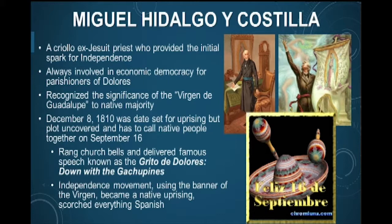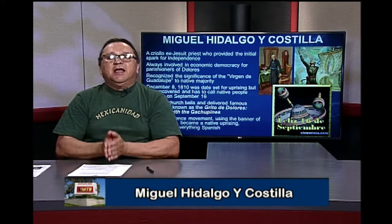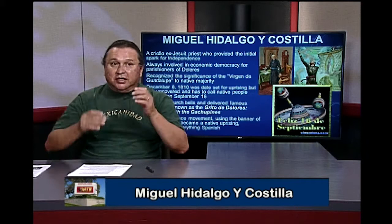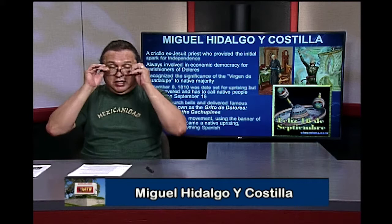Miguel Hidalgo y Costilla is important because he was a Jesuit priest always involved in economic democracy for his parishioners in Dolores. As a priest he recognized the significance of the Virgen de Guadalupe to the native majority. Even though the Criollo consciousness would eventually usurp this symbol, the Virgen de Guadalupe is a native symbol — she is a native woman, not a European woman. The Catholic Church took over 300 years to finally acknowledge her.